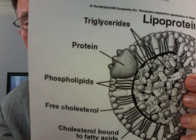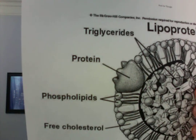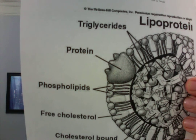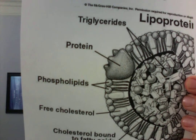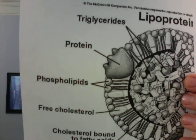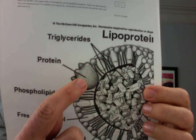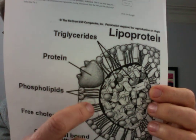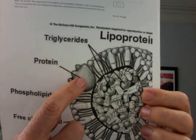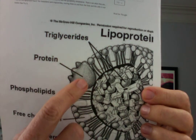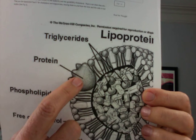They call LDL the 'lousy cholesterol.' The first L in LDL stands for low density. H in HDL stands for high density. So high density has more protein. Protein doesn't float — lipids do. So protein is a higher density material, and that's how it gets the name HDL: high density, higher amount of protein.